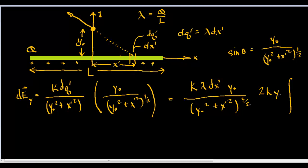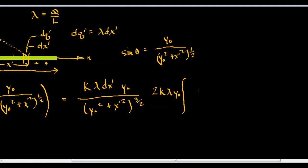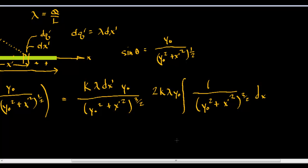So we'll make this 2 times k lambda y-naught, and then what's left on top is just dx, so we end up with the integral of 1 over (y-naught squared plus x-prime squared) to the three-halves power dx, from 0 to L over 2. This is not really solvable using traditional methods of integration.